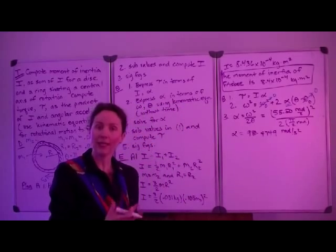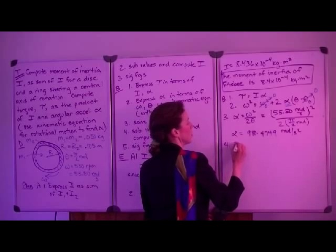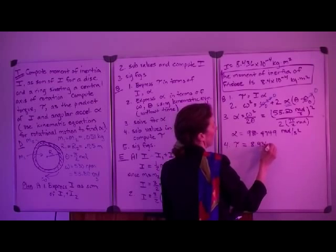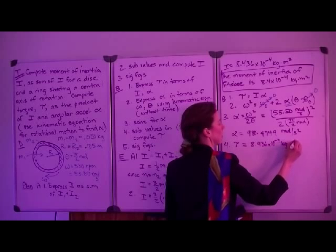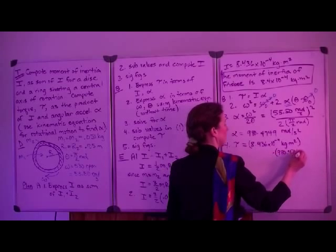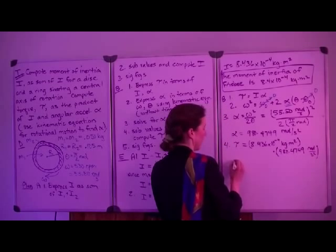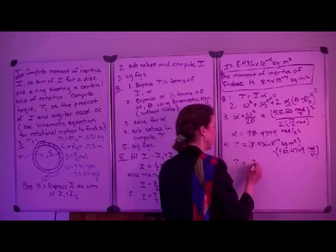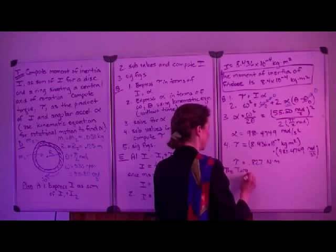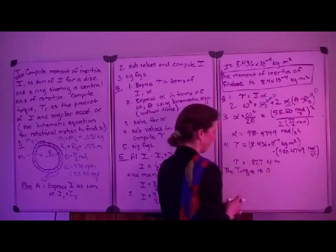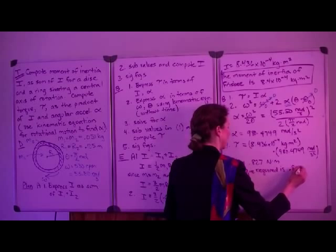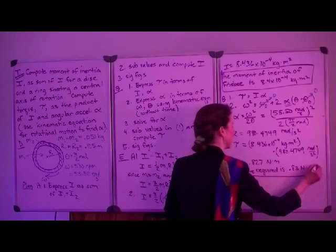We aren't actually asked for the angular acceleration value, but we need it to compute the torque. The torque equals the moment of inertia — using the non-rounded value to avoid rounding errors — multiplied by the angular acceleration. That gives a final torque of 0.827 newton-meters. To two significant digits, that's 0.83 newton-meters.